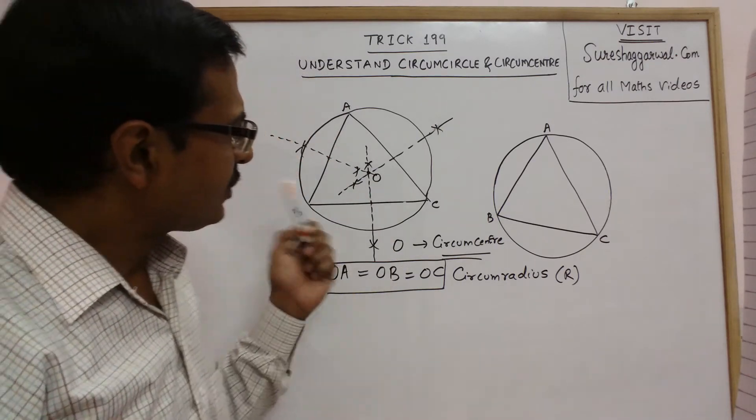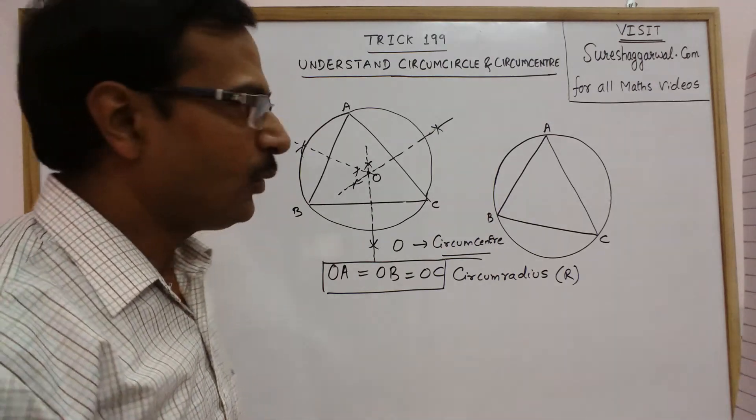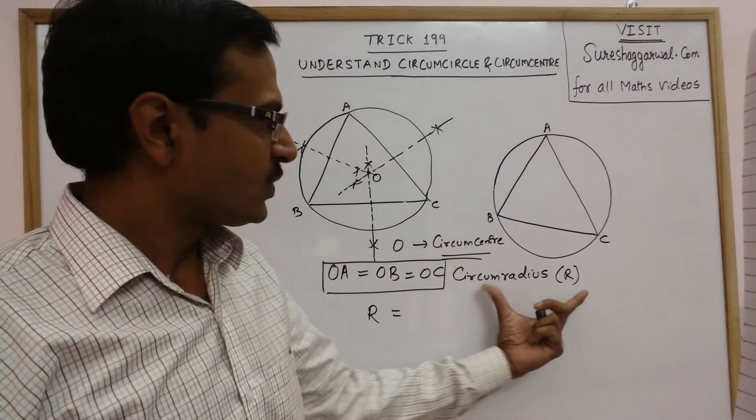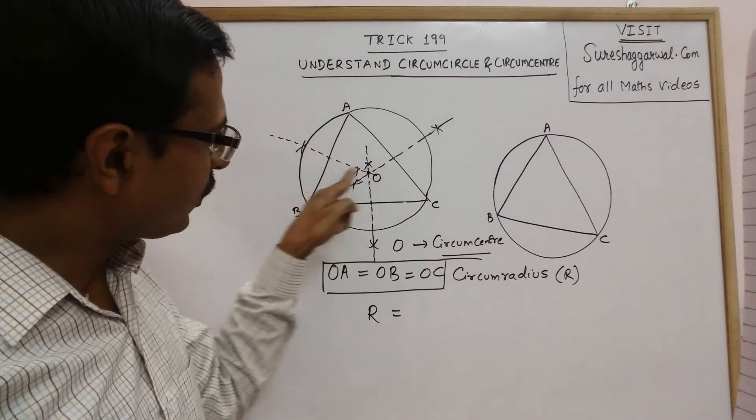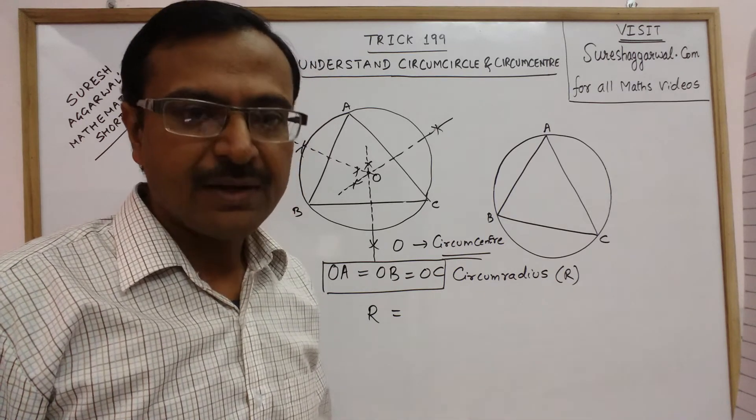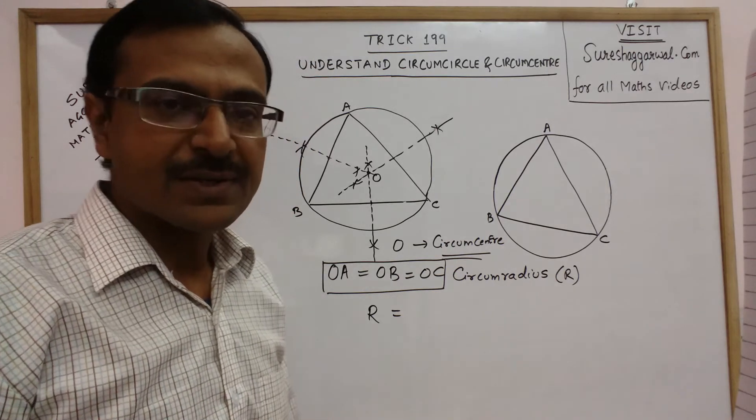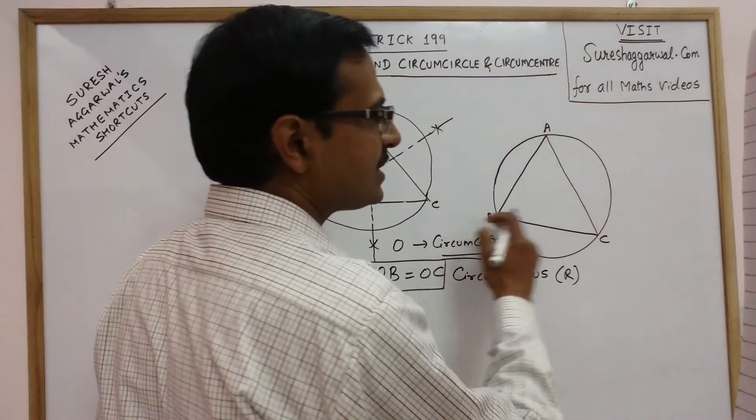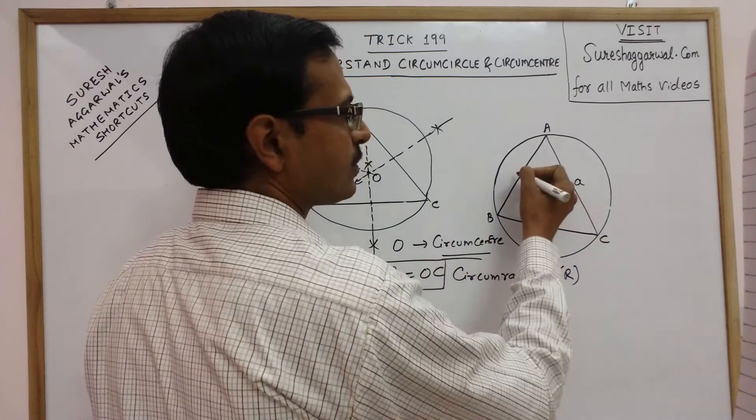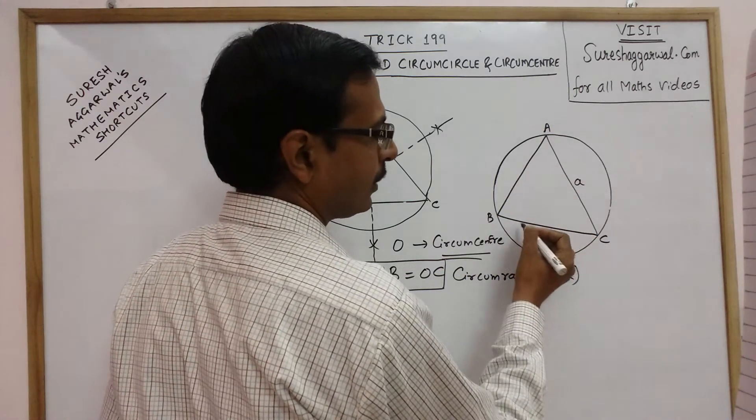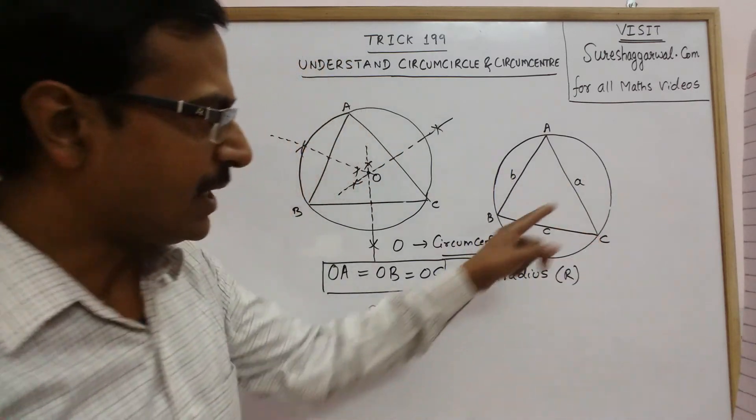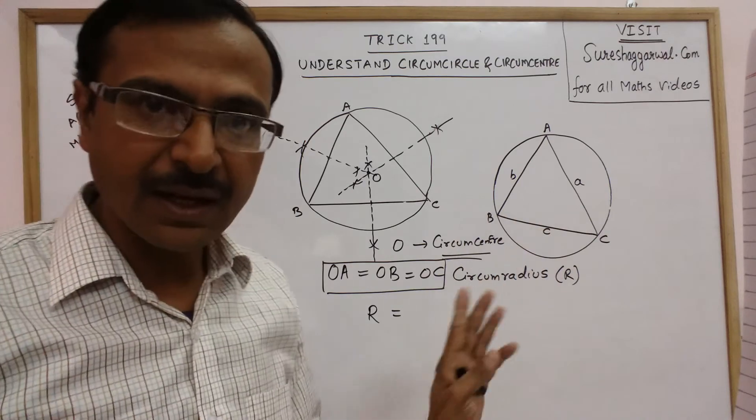Final thing which we need to know in this important concept is how we can find the value of this circumradius. The value of OA, OB or OC that is the circumradius can be found out if you can find the area of this triangle. If we assume the three sides of this triangle as small a, small b and small c. These are the length of the three sides.